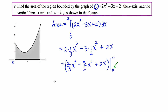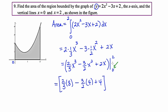The first thing I need to do is plug in the top number, which is 2. That gives me two thirds times 8, minus three halves times 4, plus 2 times 2, which is plus 4. Then when I plug in 0, everything goes away — which always makes the calculation a lot easier.